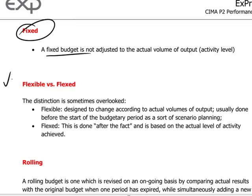Then we have the flexible and flexed budgets. The distinction here is a subtle one. A flexible budget is one which allows the budget to be organized according to certain starting assumptions, usually based on actual volume of output. So for example, if we're going to produce and sell 100,000 units of a product, here's what the budget will look like.